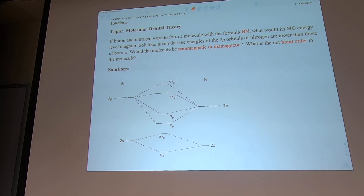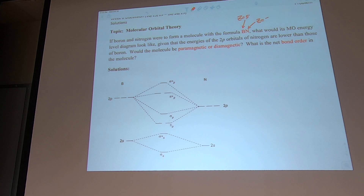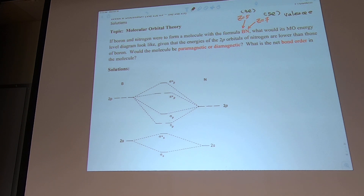This is Molecular Orbital Theory. This is related to boron and nitrogen forming a molecule with formula BN. The atomic number of boron is 5 and nitrogen is 7. What matters more is the valence electrons — boron has 3 and nitrogen has 5, so BN has a total of 3 plus 5 electrons available for bonding.